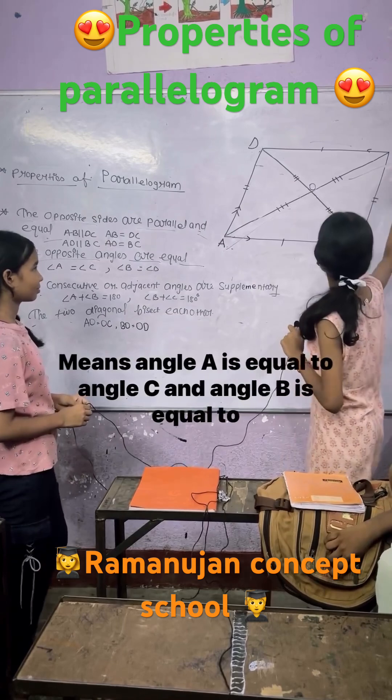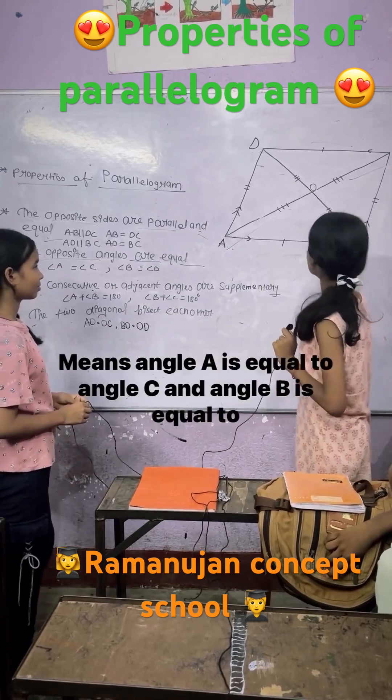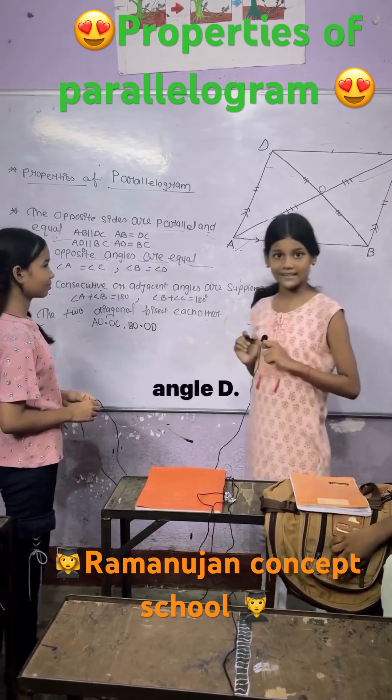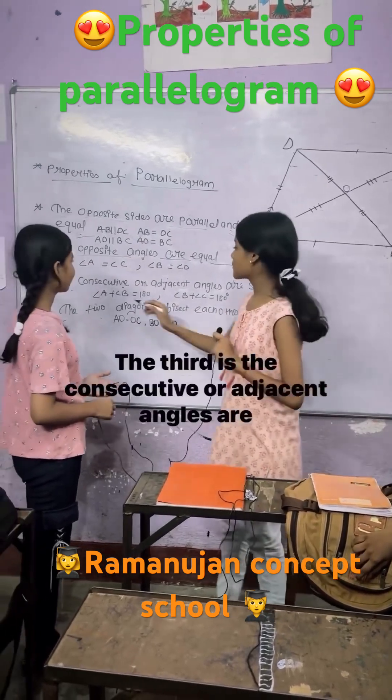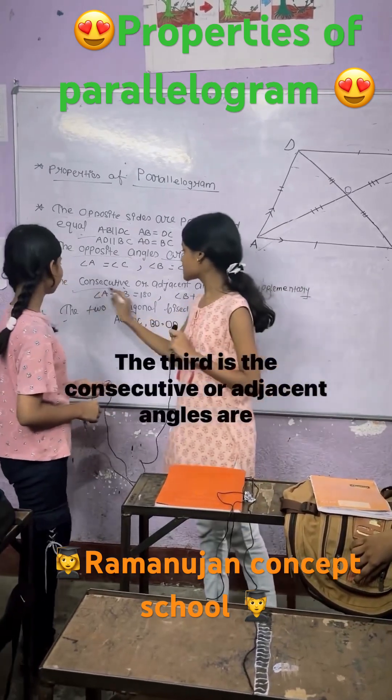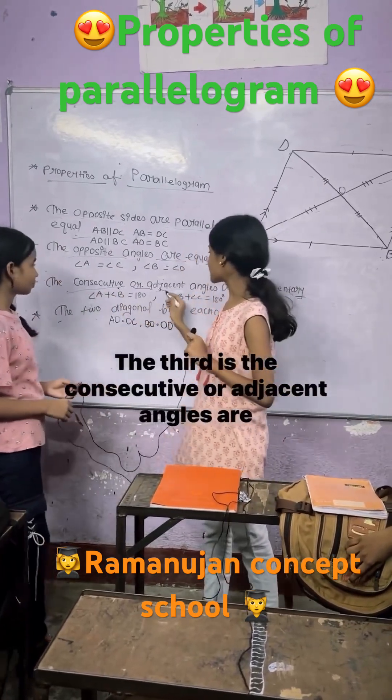The second property is the opposite angles are equal, meaning angle A is equal to angle C, and angle B is equal to angle D.